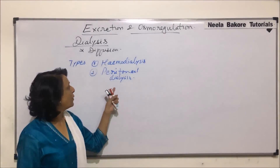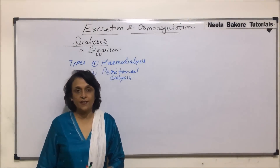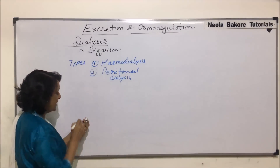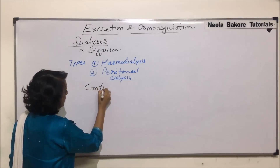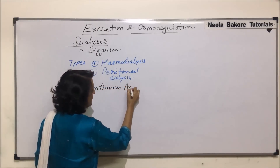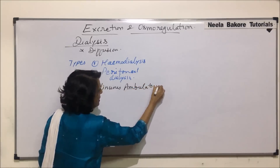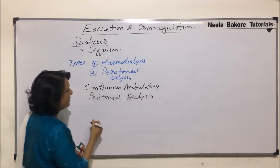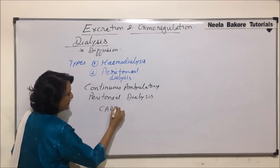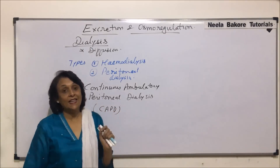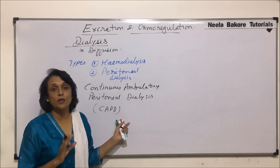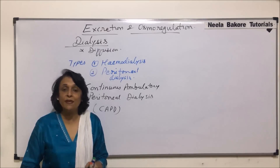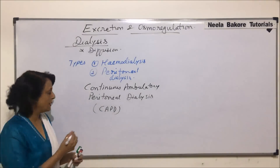We will now take up the second type of dialysis, that is peritoneal dialysis. The peritoneal dialysis which is being performed these days most commonly is known as Continuous Ambulatory Peritoneal Dialysis, abbreviated as CAPD. This is the most common type. The principle is the same — diffusion — but here the membrane acting as a semi-permeable membrane is the peritoneal membrane of the abdominal cavity.